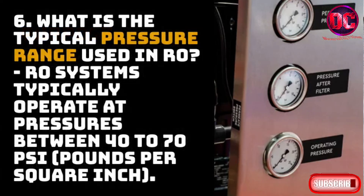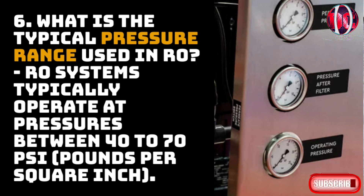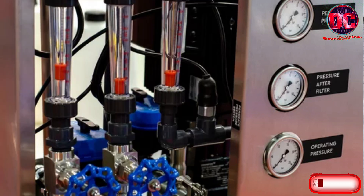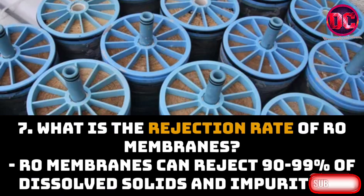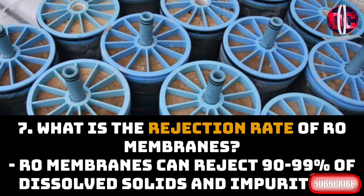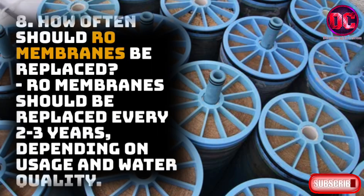6. What is the typical pressure range used in RO? RO systems typically operate at pressures between 40 to 70 pounds per square inch (PSI). 7. What is the rejection rate of RO membranes? RO membranes can reject 90 to 99% of dissolved solids and impurities. 8. How often should RO membranes be replaced? RO membranes should be replaced every 2 to 3 years, depending on usage and water quality.